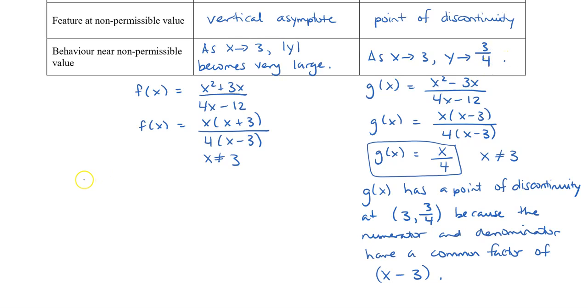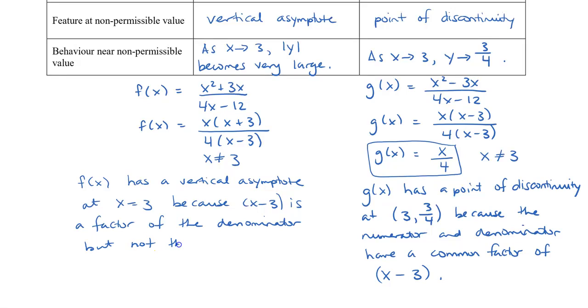Now to finish this off, let's comment about f(x). So f(x) has a vertical asymptote at x equals 3 because (x minus 3) is a factor of the denominator but not the numerator. And so it doesn't cancel off and so that it doesn't disappear. So (x minus 3) is always a factor so x cannot equal 3. Whereas the second one, it does disappear so it seems like it's not there anymore. So we simply only have x divided by 4 as our function. But we do need to go back to the original question where the denominator was 4x minus 12 and we do see that there was a non-permissible value of 3.